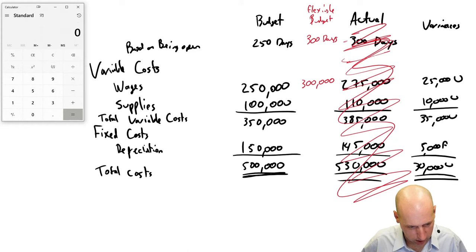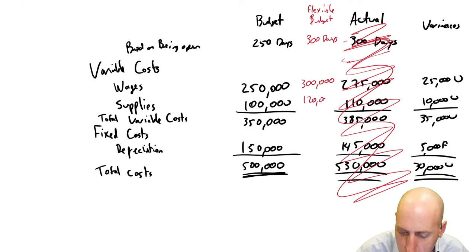My calculator is getting away from me. $100,000 based on 250 days, that's $400 a day. $400 a day for 300 days is $120,000. 300 plus 120 is 420.